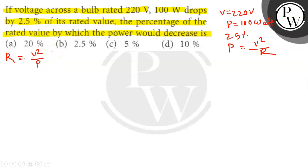To get the resistance of the bulb, we put the values in the above formula as follows. R is equal to 220V square divided by 100. R will be 484 Ohm.